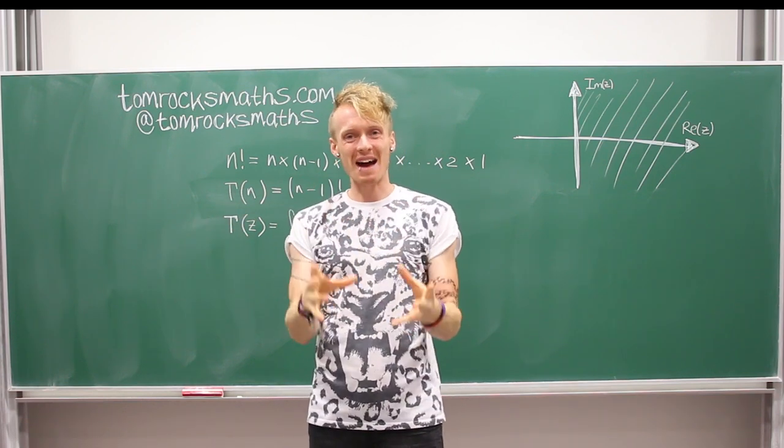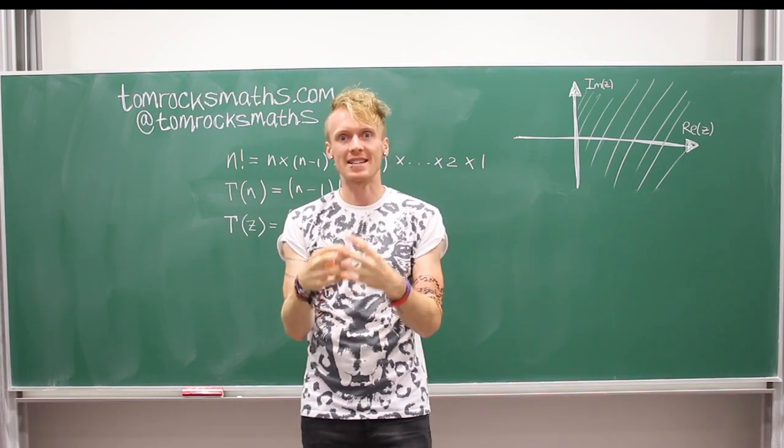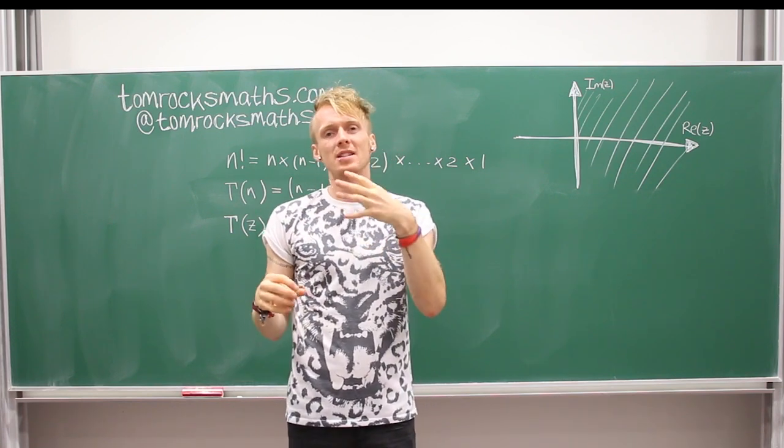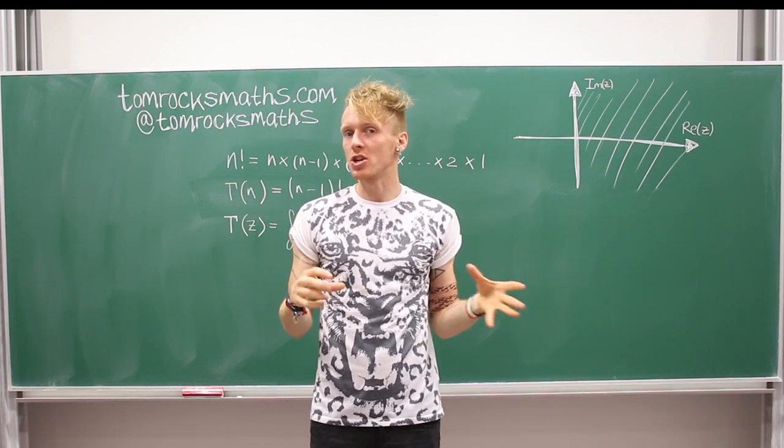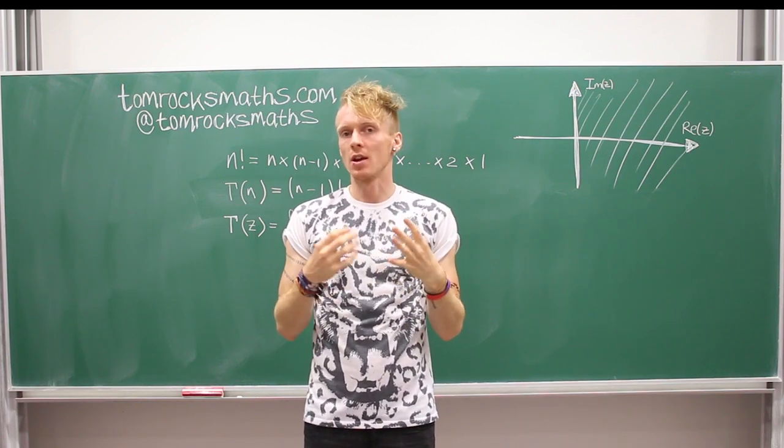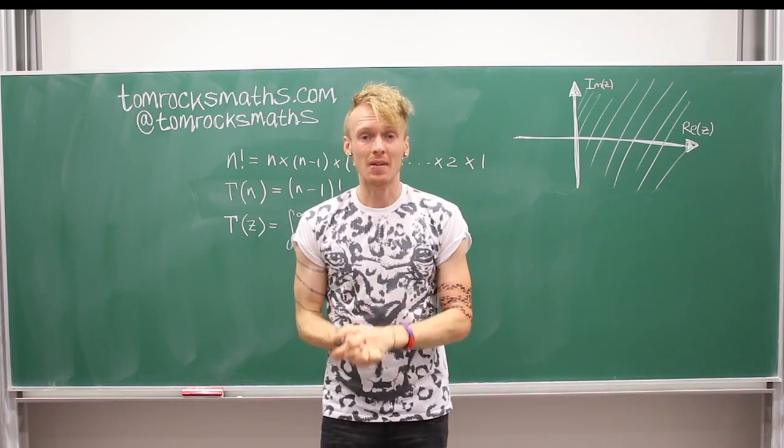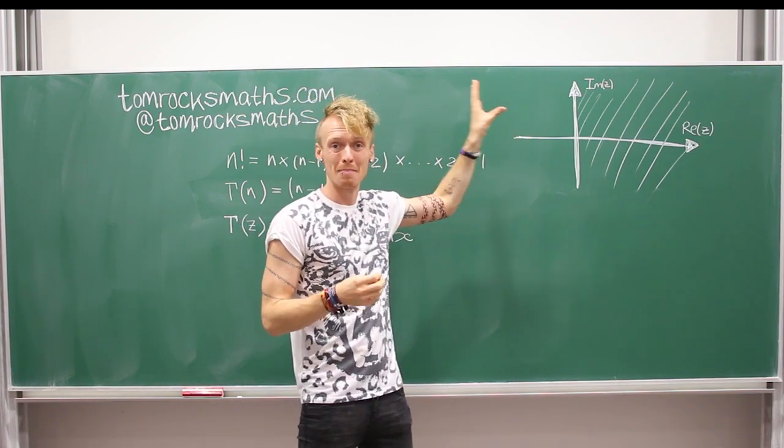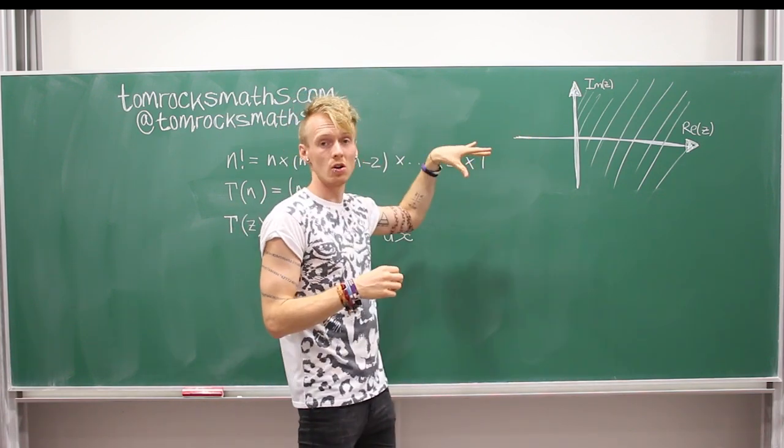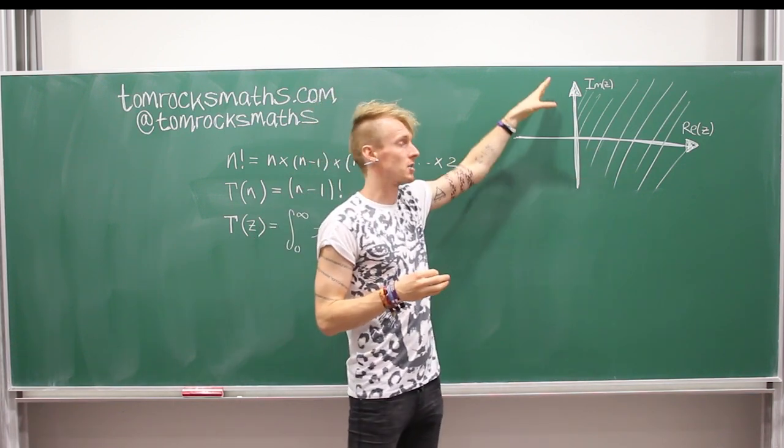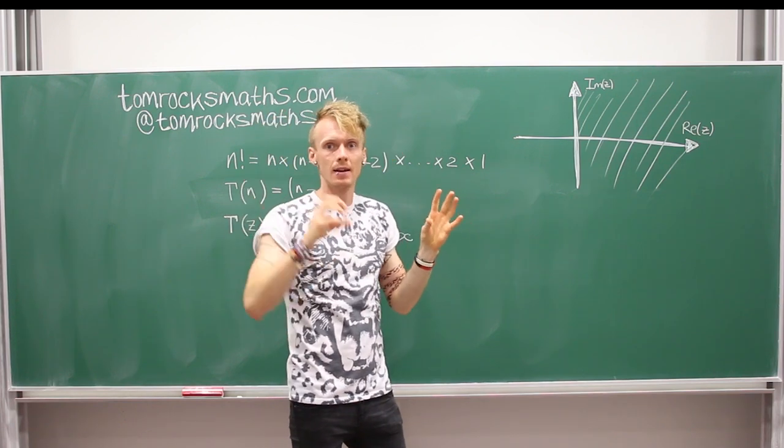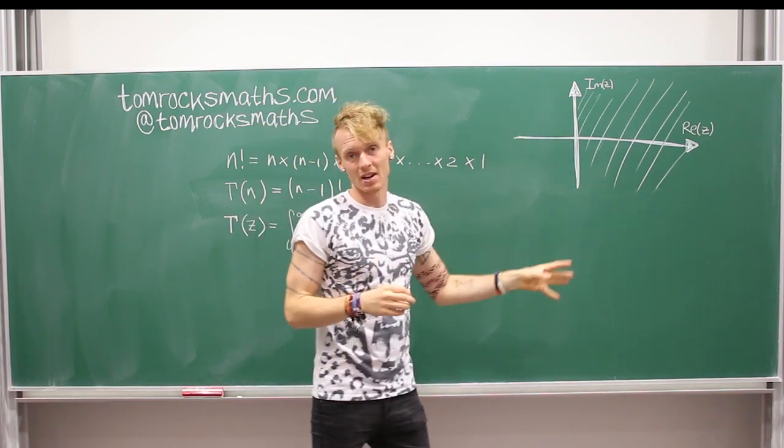But the reason we have a separate function called this gamma function is because it's actually valid in a much larger range of numbers than just the positive integers. And so if we consider the complex plane, so this is where your real numbers are along the x-axis and your imaginary numbers, where you have like the plus i,